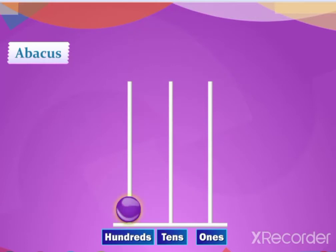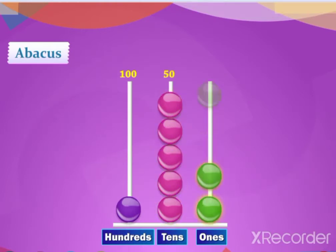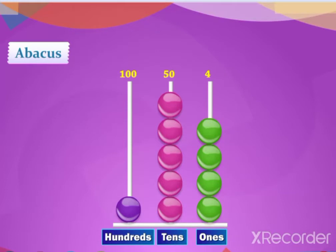This has one bead in the hundreds spike, making it one hundred. Five beads in the tens spike, making it five tens, or fifty. Four beads in the ones spike, making it four ones, that is four. Hence, the number is one hundred and fifty-four.